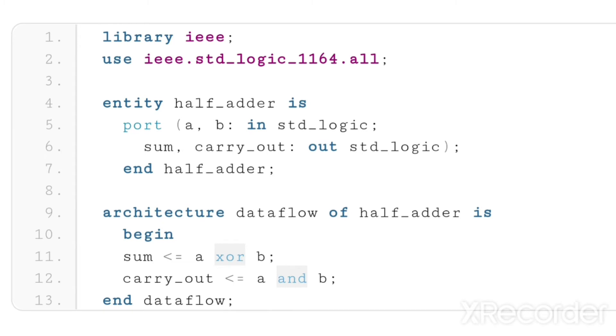Coming to the architecture, in the architecture part, we are supposed to write the logic. For the half adder, we can directly write the sum and carry expressions. In place of the logic, we're going to write the gate primitives.